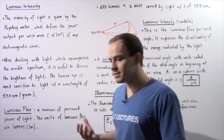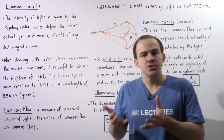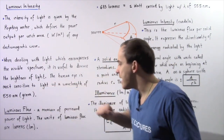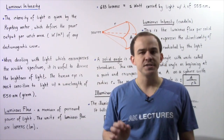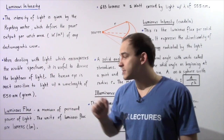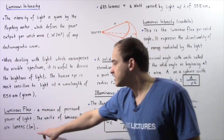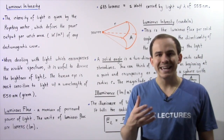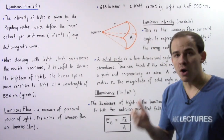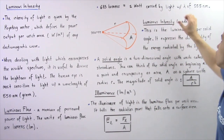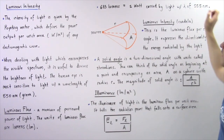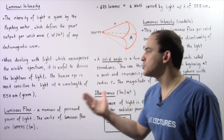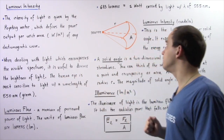Luminous flux is essentially a quantity that tells us how much power a certain light wave carries. It is a measure of the perceived power of visible light. The units of luminous flux are known as lumens, or simply LM. We define 683 lumens as equaling one watt of power carried by light with a wavelength of 555 nanometers, because the human eye is most sensitive to this type of light.